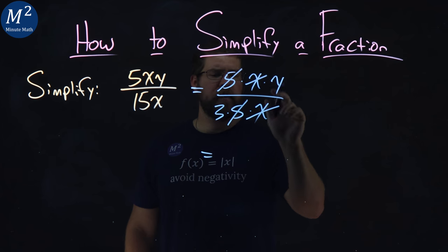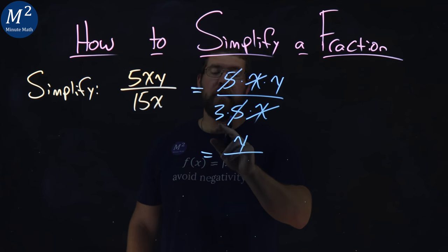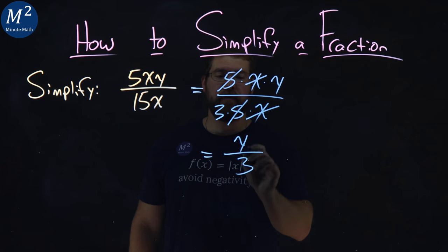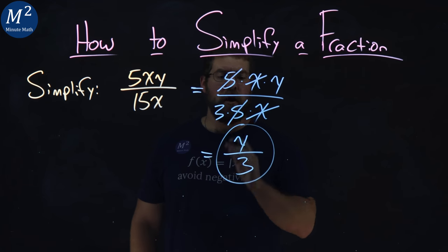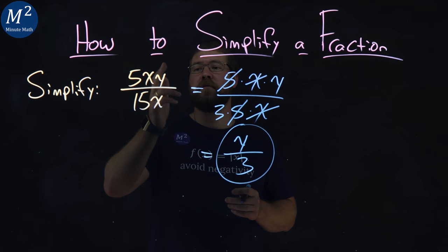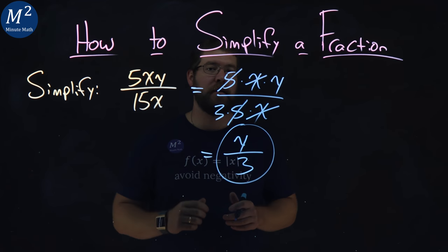What's left over? I just have a y in the numerator, and in the denominator, I have a 3. That's it. Y over 3 is the simplified answer of 5xy over 15x.